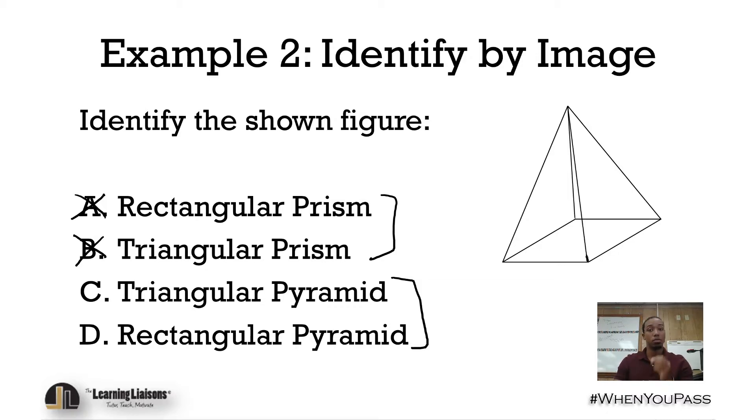3D objects, prisms and pyramids, are named by their base. So what does this base look like? Well, it's definitely four sides, does not look like three sides, it's four sides. So there's no way that it'd be a triangular pyramid—it would have to be a rectangular pyramid.